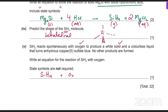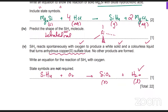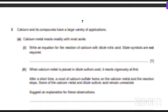SiH4 reacts spontaneously with oxygen — state symbols are not required. It produces a white solid and a colorless liquid. That would be silicon dioxide (the white solid) and water (the colorless liquid). This is also a test for water — anhydrous copper sulfate turns blue, that's a test in salt analysis for water.